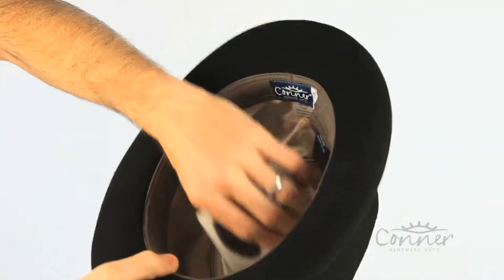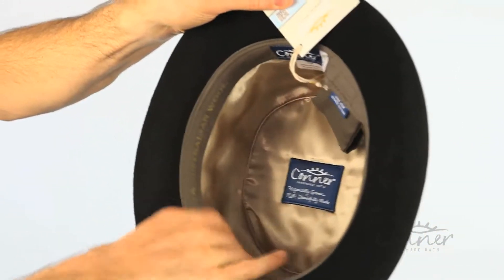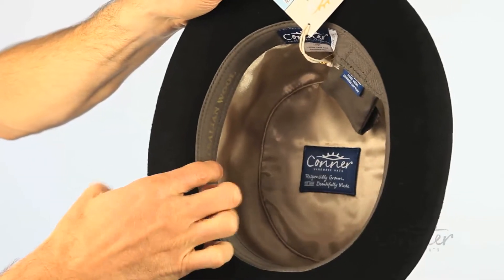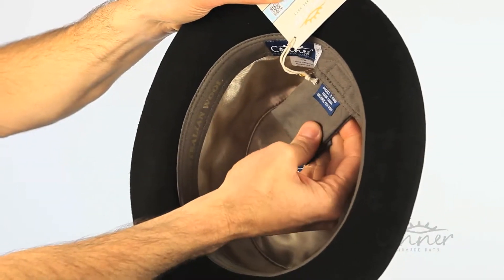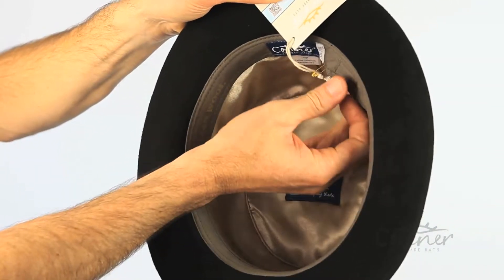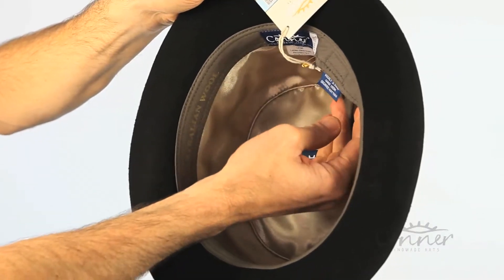On the underside of the hat we have our satin lining, our organic cotton sweat band, our organic cotton secret pouch that can either stay in or come out. It's designed to fit a credit card.